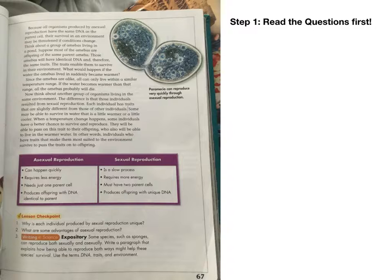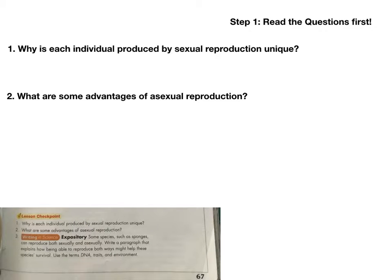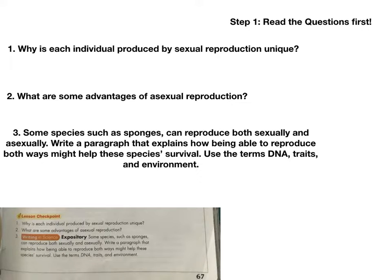The first step is to read the questions first. I already flipped to page 67. I'm going to focus on just the questions, and I rewrote them so we could see them a little bit better. Number one: why is each individual produced by sexual reproduction unique? Number two: what are some advantages of asexual reproduction? And number three: some species such as sponges can reproduce both sexually and asexually. Now we're going to try to find some key words.